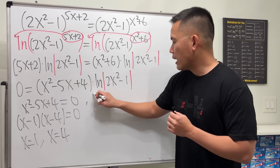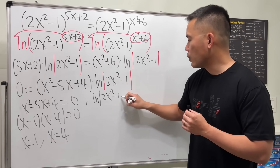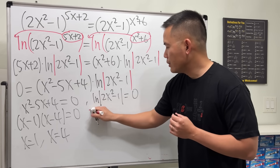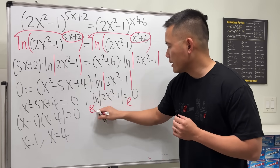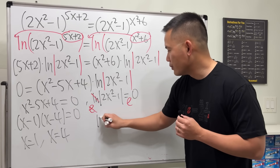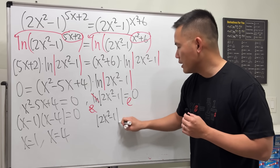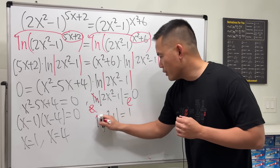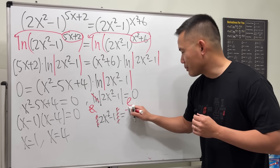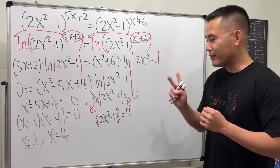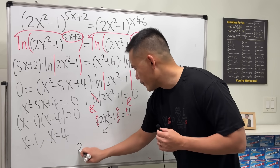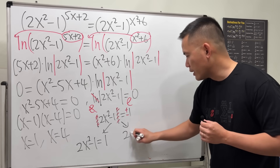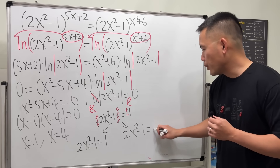For the second factor: ln|2x² - 1| = 0. Exponentiating both sides, e to each side, they cancel and we get |2x² - 1| = e⁰ = 1. Removing the absolute value gives two cases: 2x² - 1 = 1, or 2x² - 1 = -1.